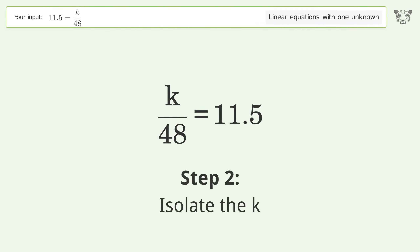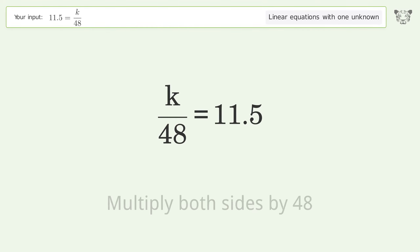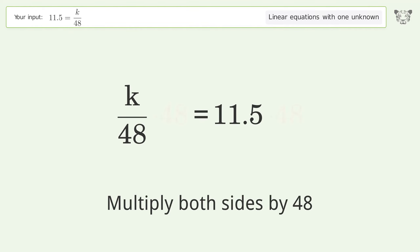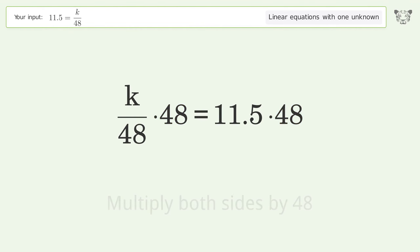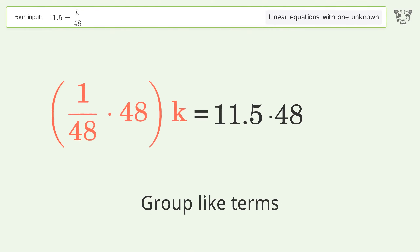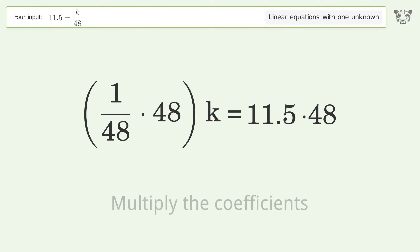Isolate the k: multiply both sides by 48. Group like terms, then multiply the coefficients.